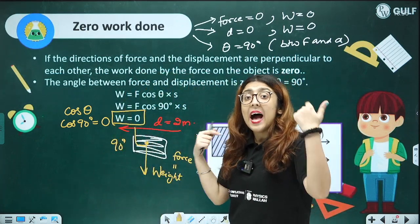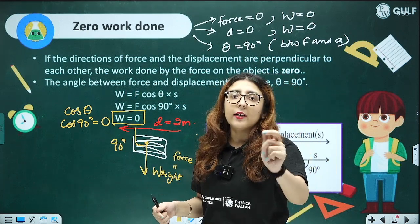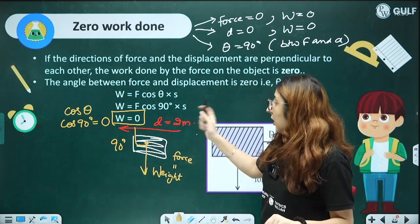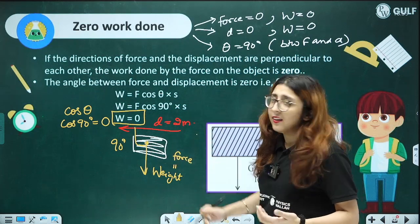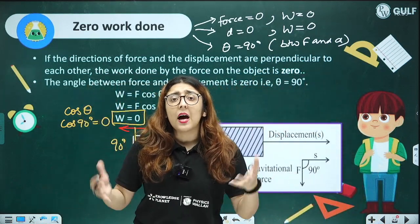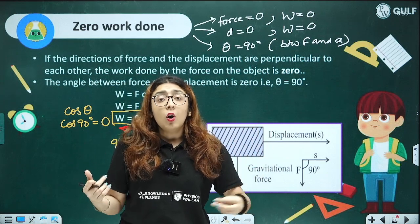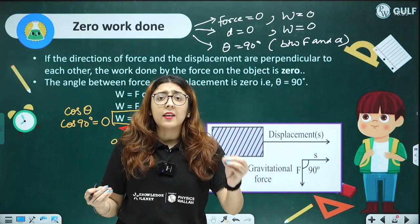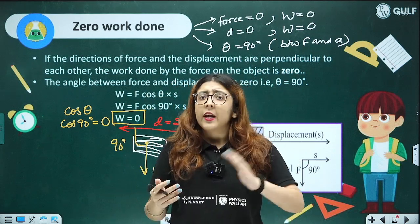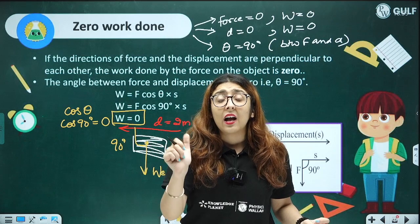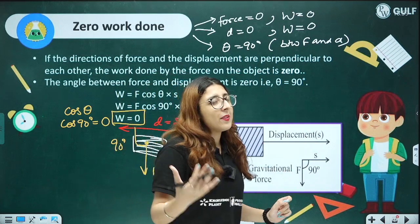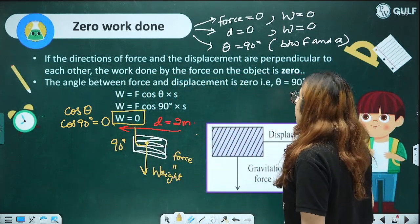Similarly, when carrying your bag to school — you are covering a displacement, but the force acting is only the weight of the bag at 90° to the direction of motion, so work done is 0. Even porters who carry bags on their heads and walk — logically in physics they are doing 0 work done, yet you still pay them.